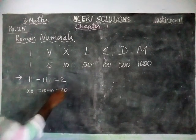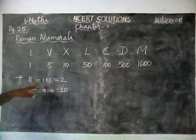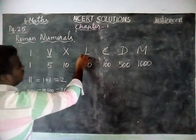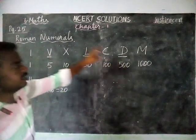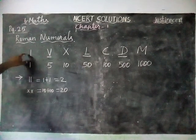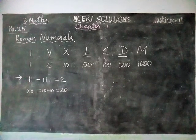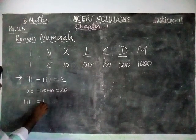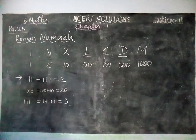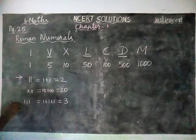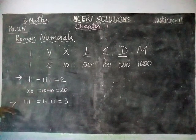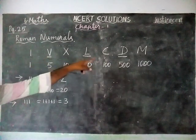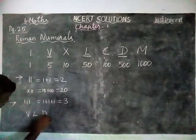Like that, when a letter is repeated, the value will be added. And there is a condition: the letters V, L, D will not be repeated. And the maximum number of times a number can repeat is only 3 times. For example, I, I, I — the meaning is 1 plus 1 plus 1 is equal to 3. So this is the first and second rule. First rule: if a letter is repeated, the value will be added. Second rule: V, L, D will not be repeated.